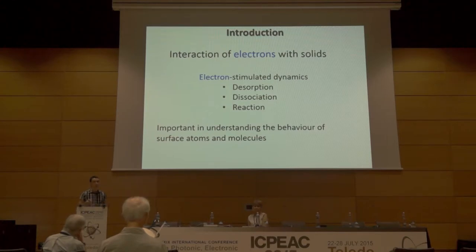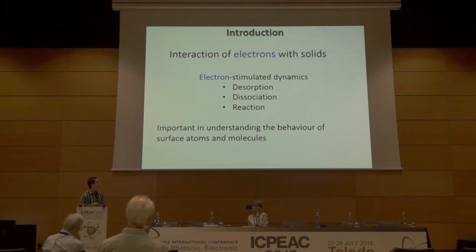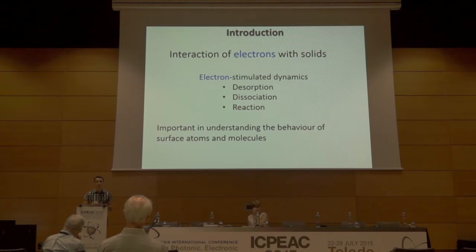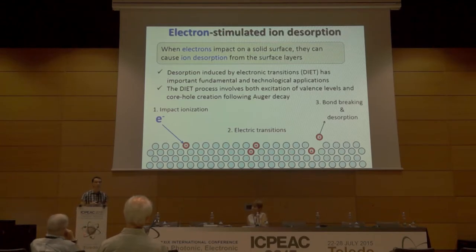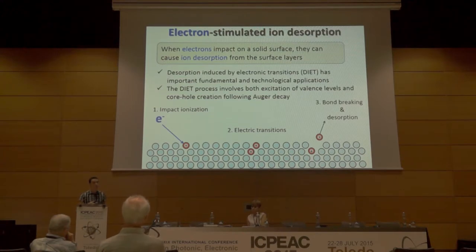When we have a beam of electrons impinging onto a solid surface, there are a bunch of processes that can happen: desorption, dissociation, or reaction with the atoms and molecules of the solid surface. These processes are important for understanding surface behavior, especially for targets with industrial applications, but also from a fundamental point of view. We focus on the desorption process — specifically electron-stimulated ion desorption, when electrons impacting on a solid surface cause ion desorption from the surface layers. This process is called DIET: desorption induced by electronic transitions, and it has very important fundamental and technological applications.